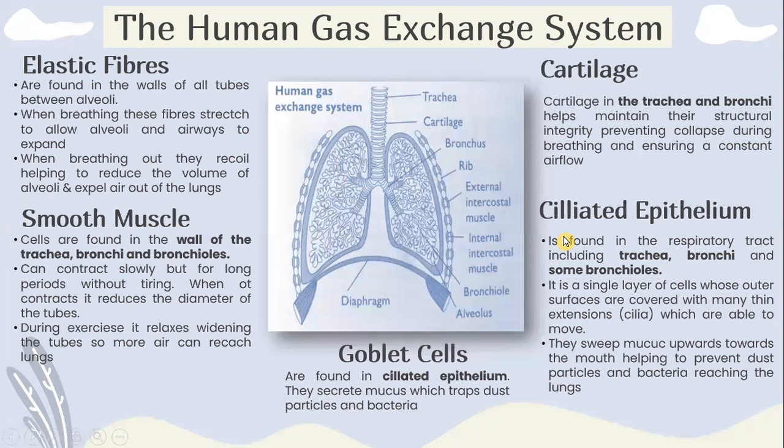The human gas exchange system. Cartilage is found in the trachea and bronchi, which helps to maintain their structural integrity, preventing collapse during breathing and ensuring constant airflow.